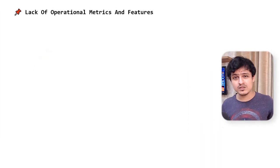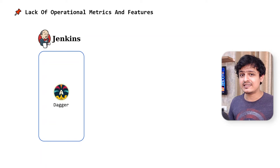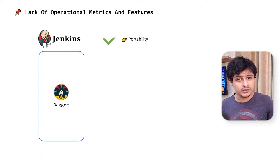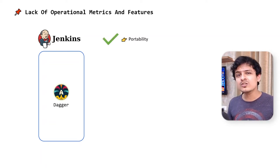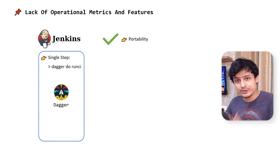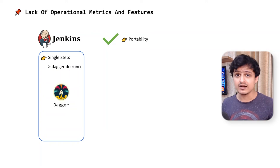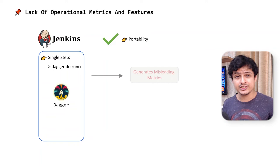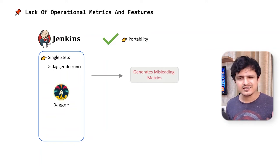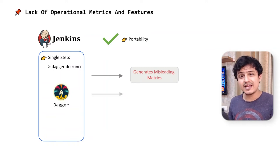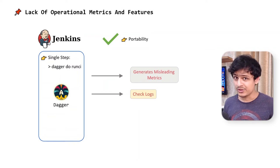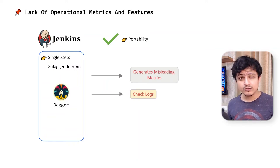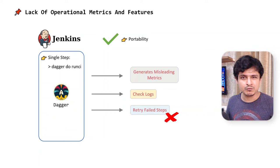A bigger problem, however, is that Dagger is meant to be run by another CI/CD tool by design. This is great from a portability standpoint, but it also means that the pipeline defined in my CI/CD tool will have just one step — to run Dagger. This also means that the metrics and visualizations my CI/CD tool produces will be misleading. And since Dagger doesn't really have a metric exporter yet, the only way to figure out which action in my pipeline has failed would be the logs.